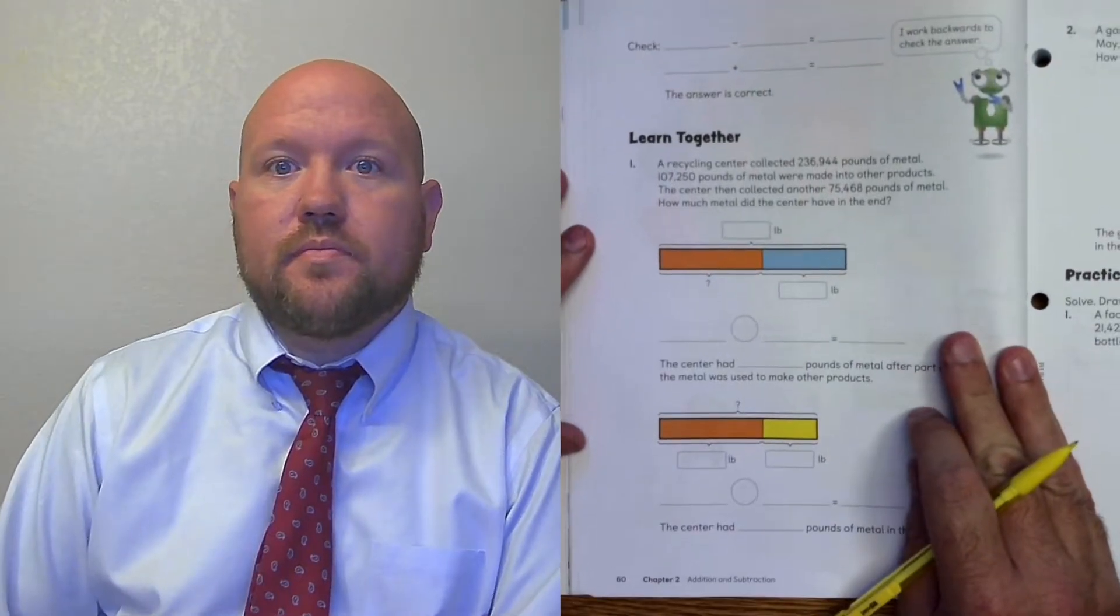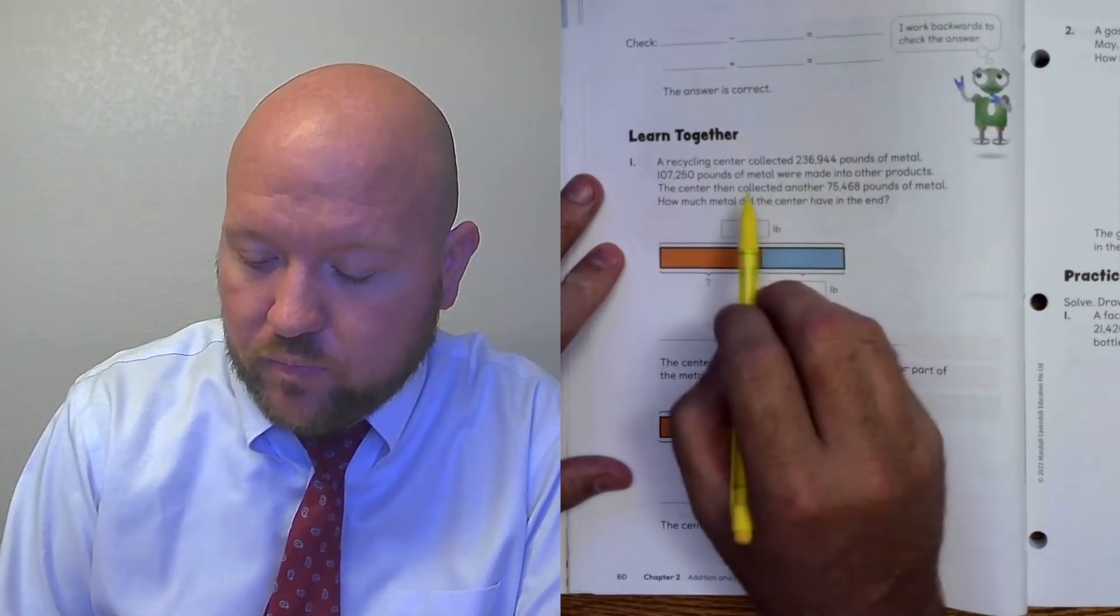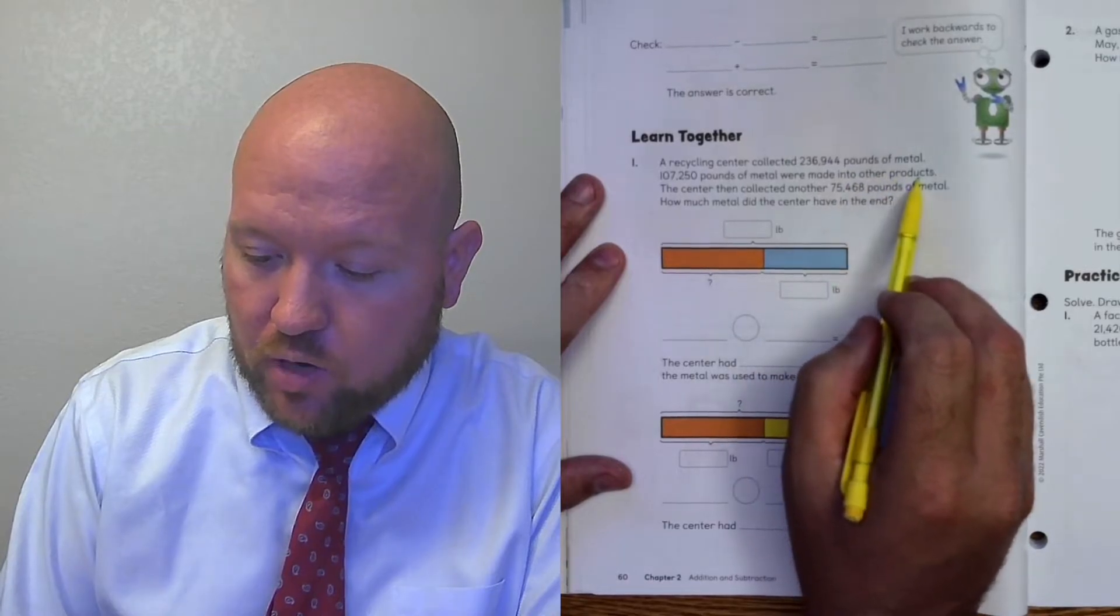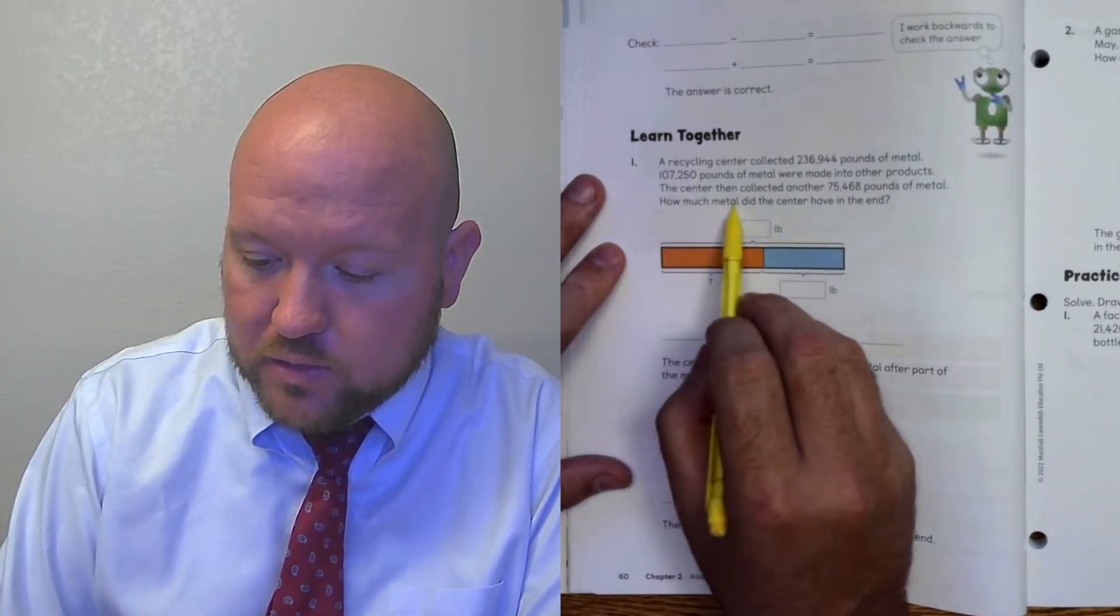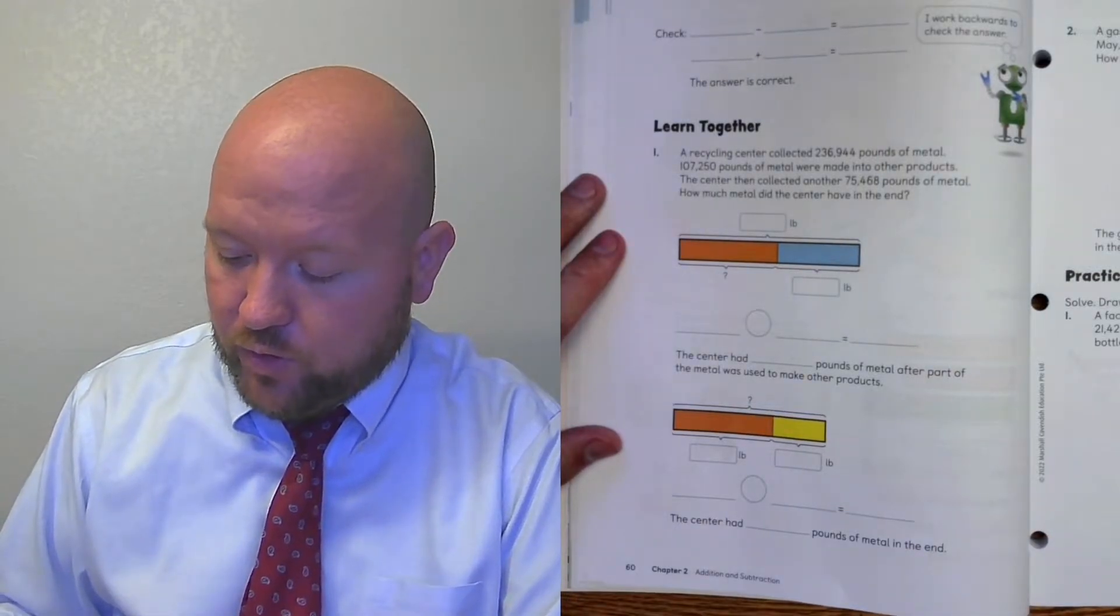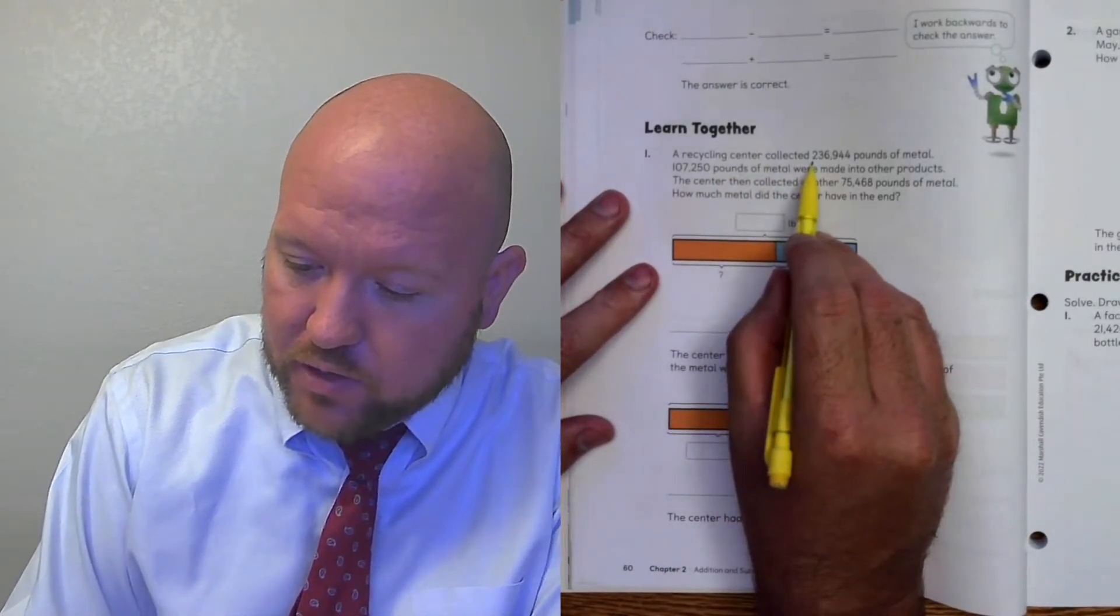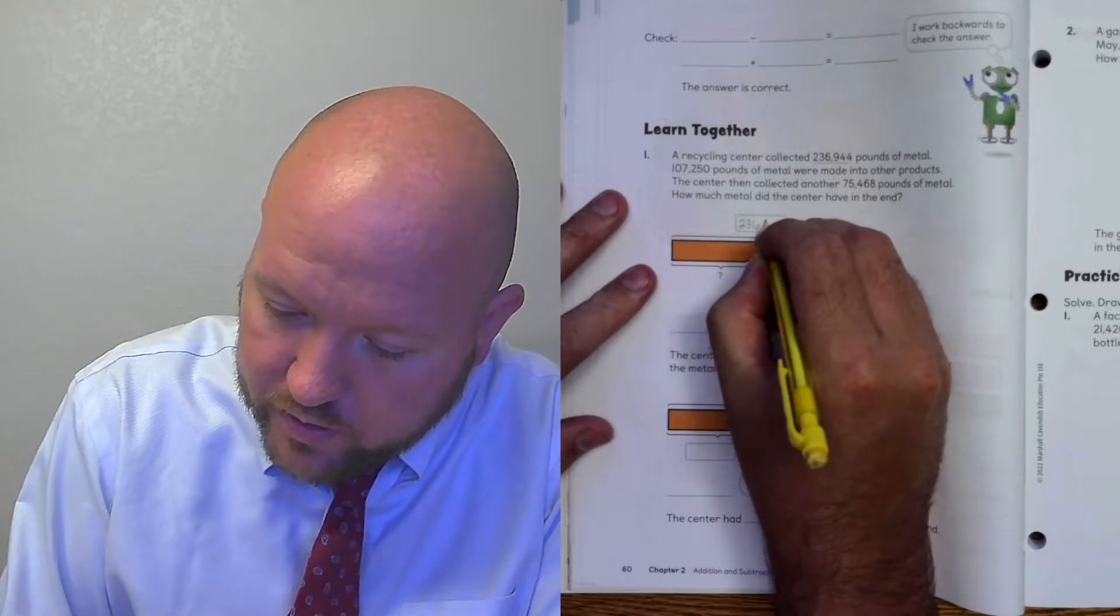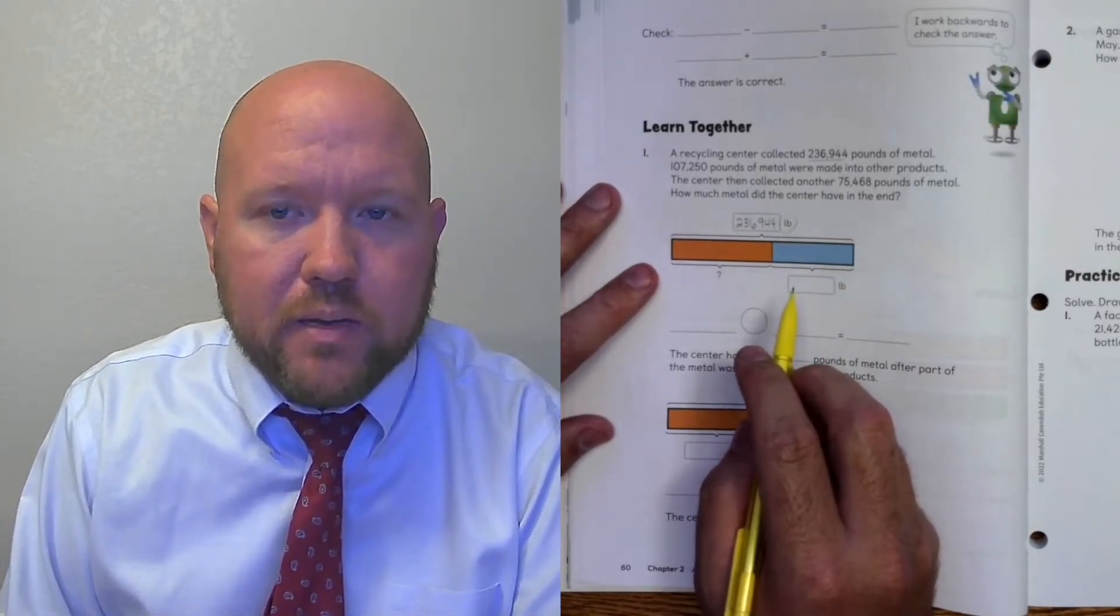All right. Very good. So learn together. A recycling center collects 336,944 pounds of metal. 107,250 pounds of metal were made into other products. The center then collected another 75,468 pounds of metal. How much metal did the center have in the end? Now they've used two different bar models to do this. And that's probably the best way to do it. It'd be kind of confusing if we did it in one model. You could, but it'd be hard.